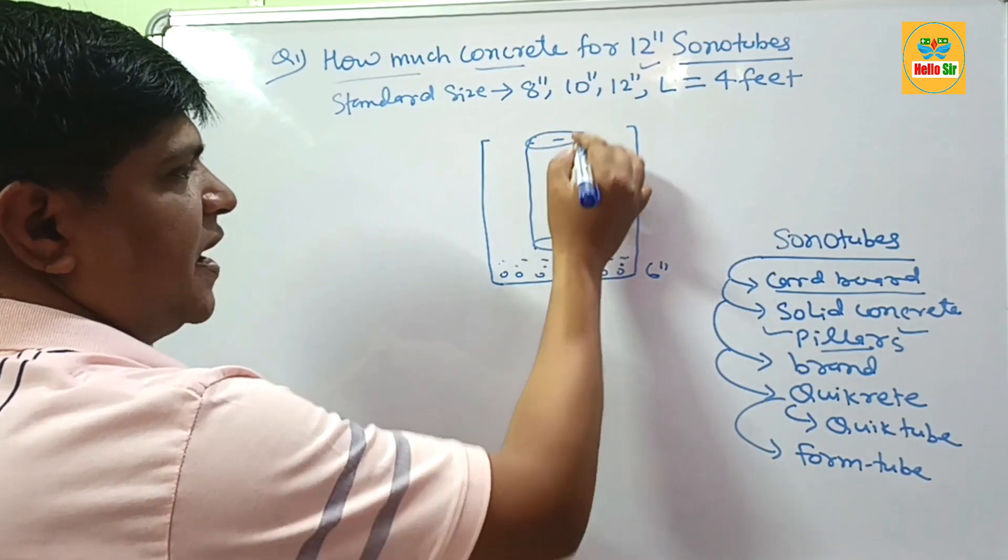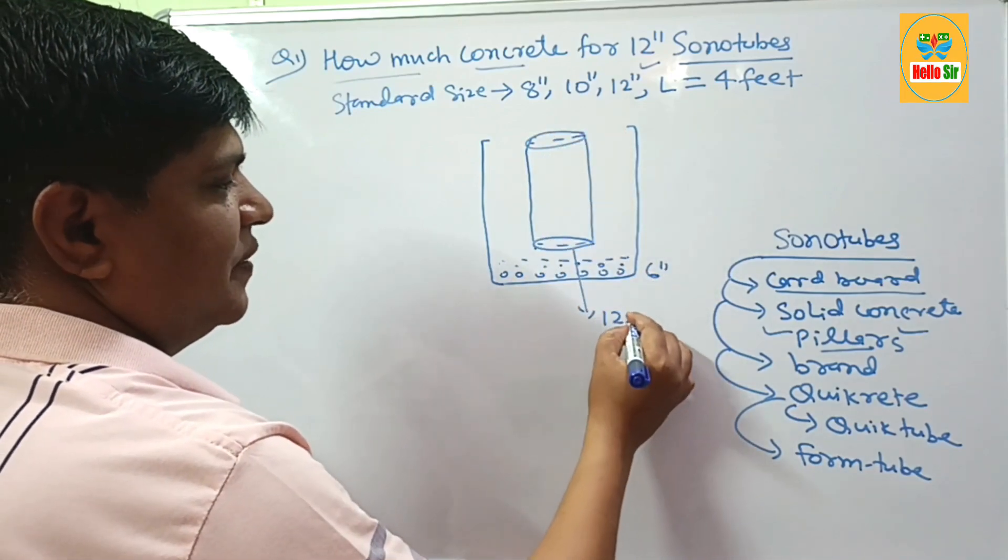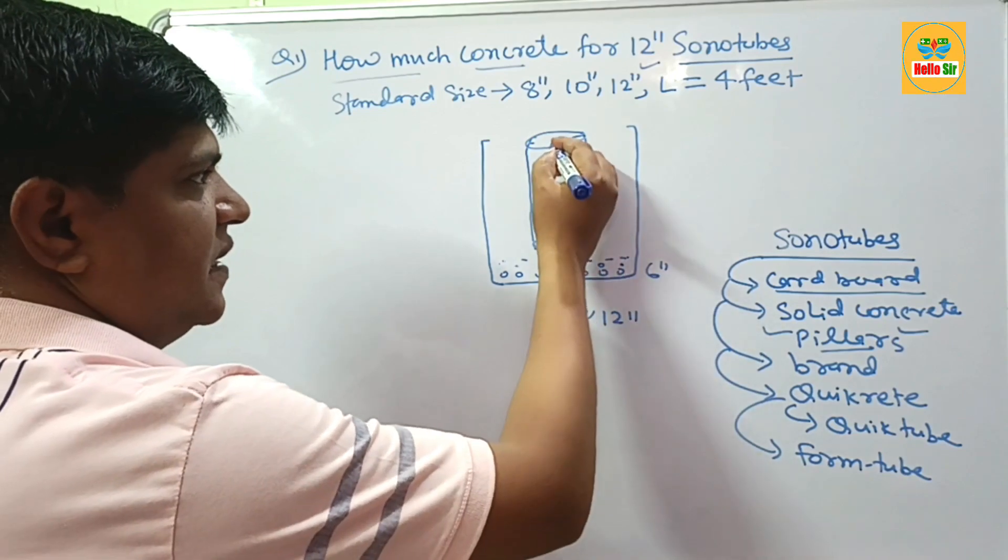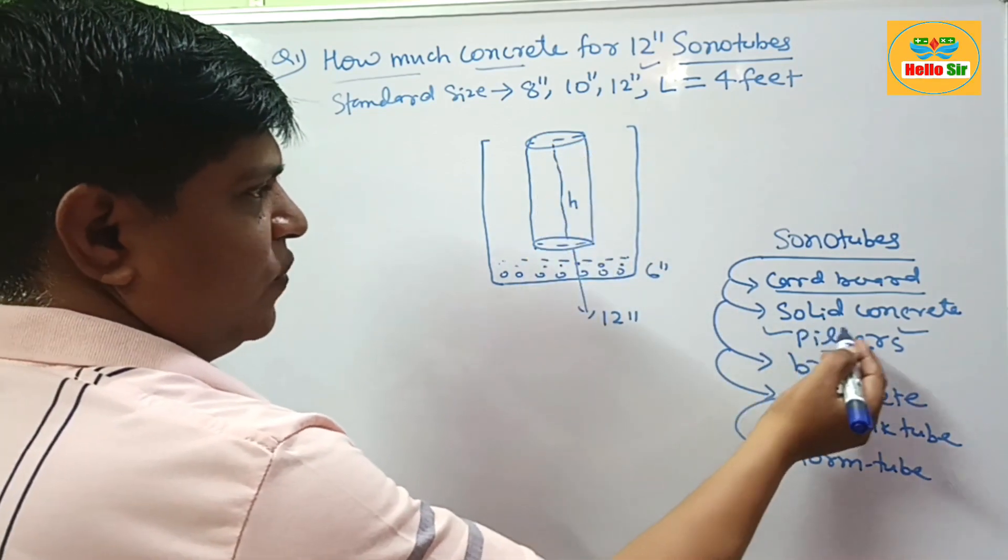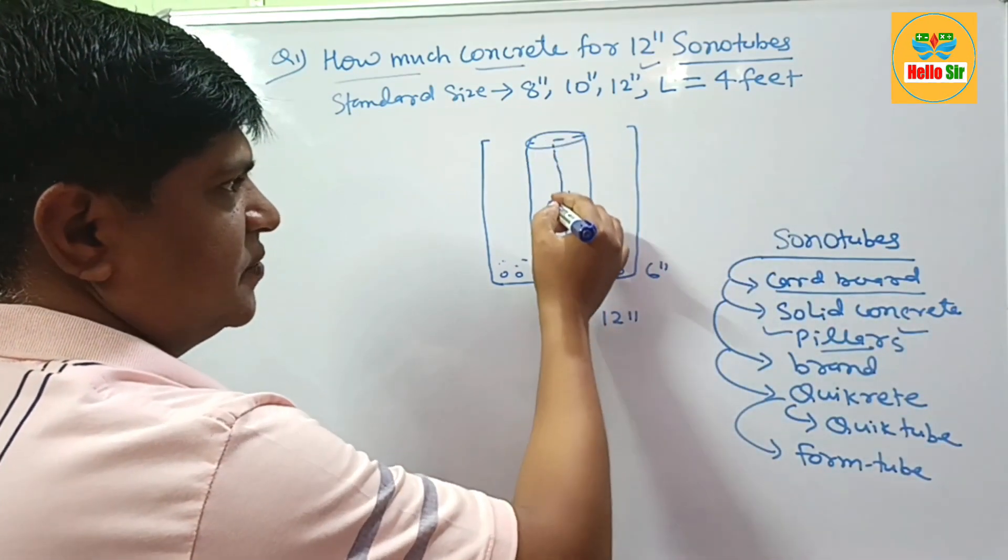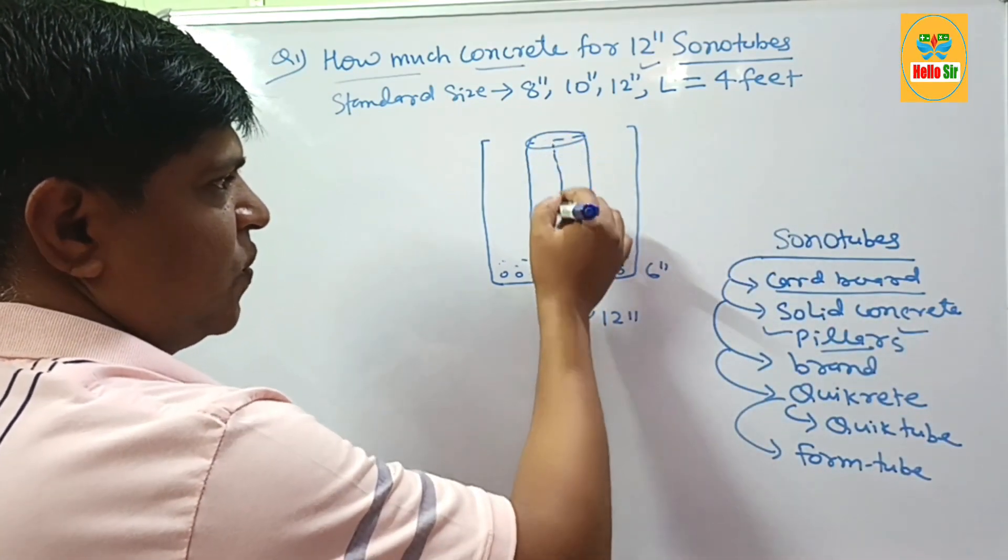What is their diameter? Their diameter is about 12 inches. And this is the height of the sonotubes. You have to fill the concrete in this space, in this box only.